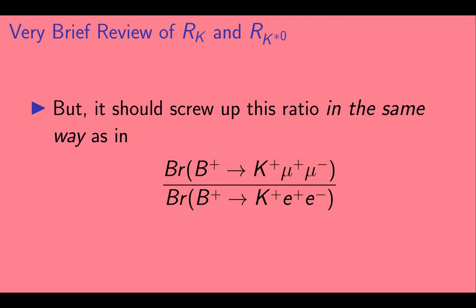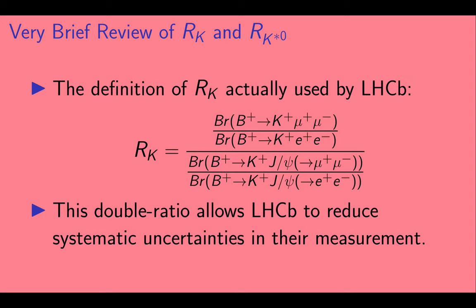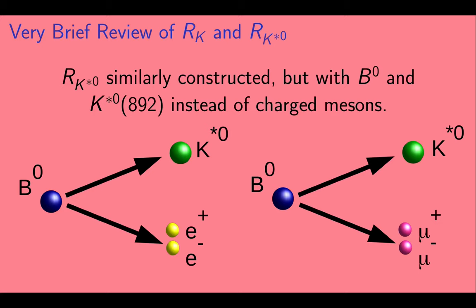But it should get it wrong in the same way as it will get the ratio we actually want wrong. In other words, if you are better at identifying muons than electrons, it should throw off both of these ratios in the same way. So here's the definition of RK actually used by LHCb. They take a double ratio. If experiments were perfect, the ratio on the bottom would be essentially 1. But experiments aren't perfect and the ratio on the bottom helps eliminate systematic errors that would occur if they instead just used the ratio in the numerator as their definition of RK.